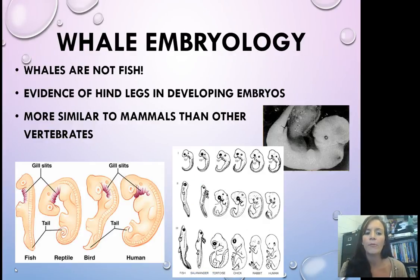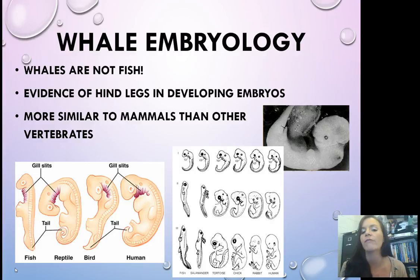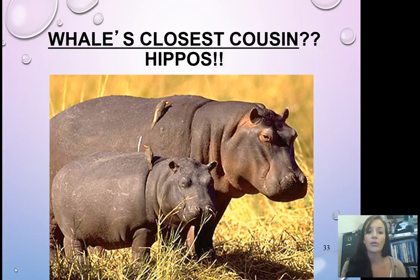A little bit more in terms of embryology. Whales are not fish — they are mammals. There's evidence of hind legs while they're developing in their embryo stage, and they are more similar to mammals than other vertebrates. If you look here, you'll see fish, reptile, bird, and human embryos. Even at step two, the fish looks very different from the other mammals. The whale — that black and white photo in the upper right corner — looks much more similar to a rabbit or a human than to a fish or a salamander. So the end result: the whale's closest cousin is the hippo.